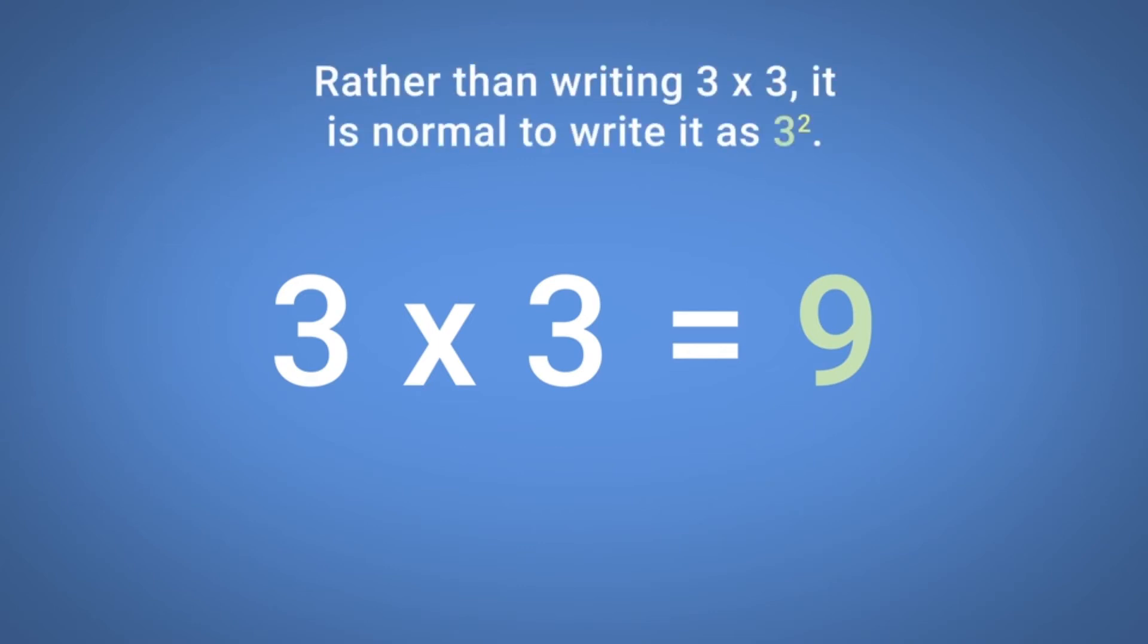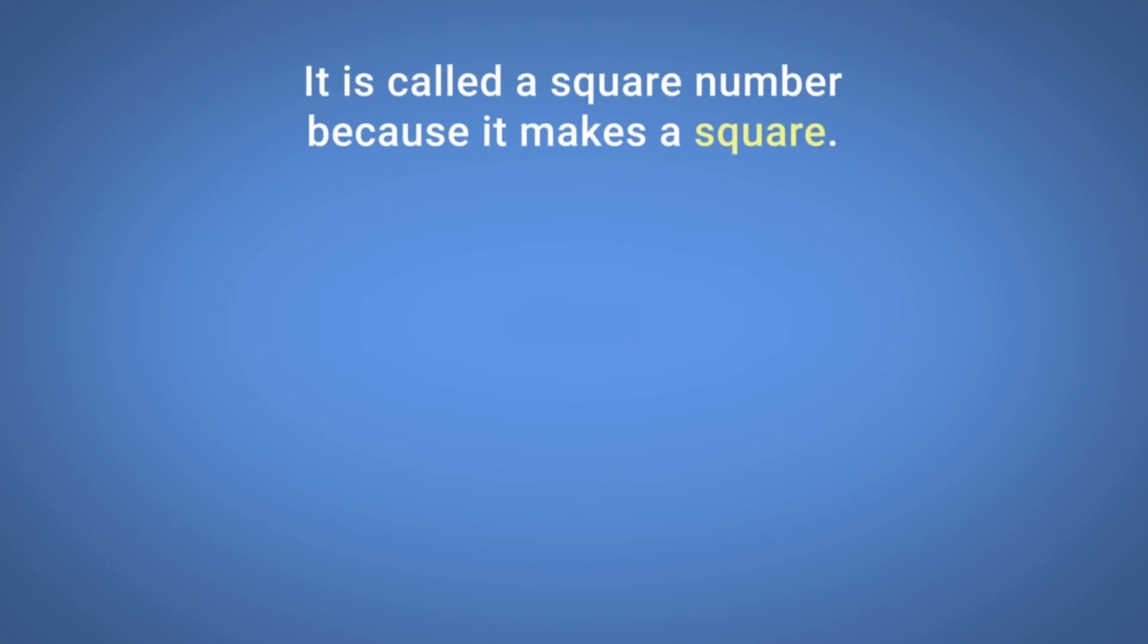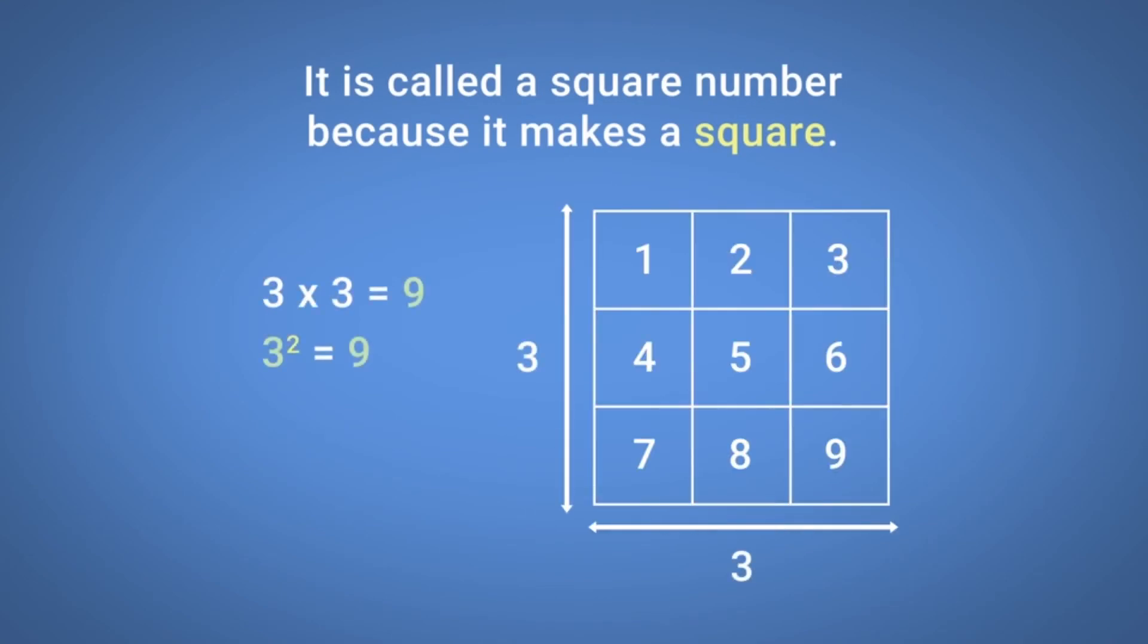Rather than writing 3 multiplied by 3, it is normal to write it as 3 squared. It is called a square number because it makes a square.